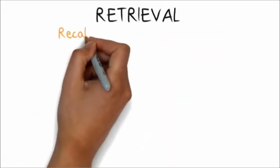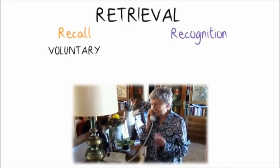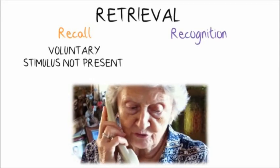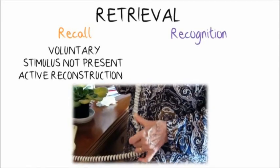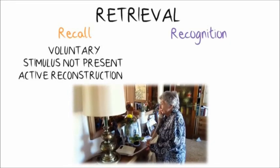There are two main methods of accessing memory: recall and recognition. Recall involves voluntarily remembering a fact, event or stimulus that is not currently physically present, by actively reconstructing the information. This happens, for instance, when you recreate your last weekend during a conversation with a friend.